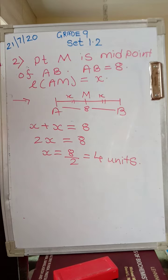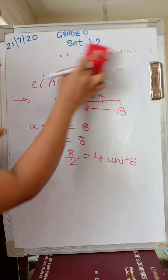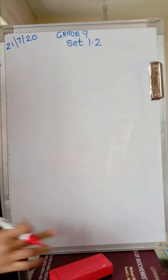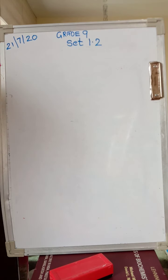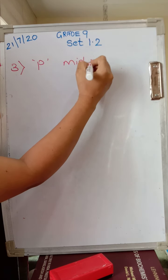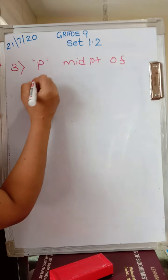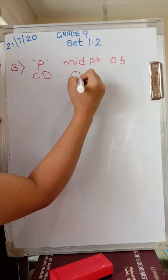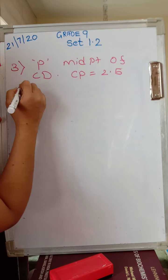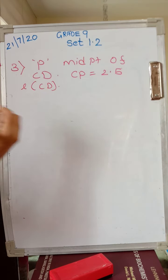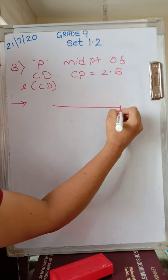So we are doing the third problem now. It says point P is midpoint of CD. In the third problem, CP is 2.5, and you should be finding length CD. Always draw a diagram. It becomes very easy to understand what the condition is.